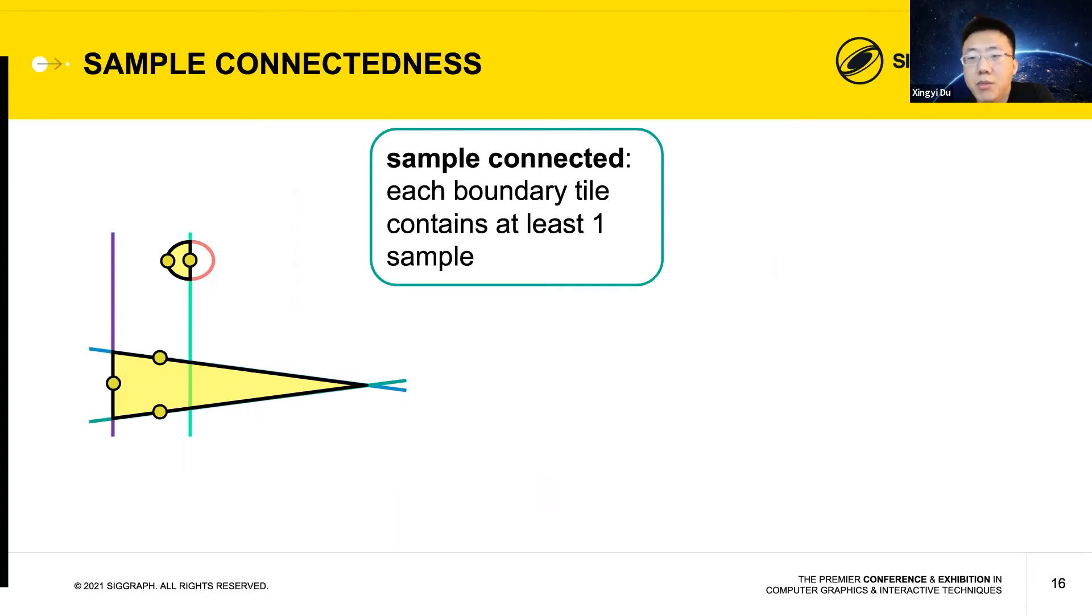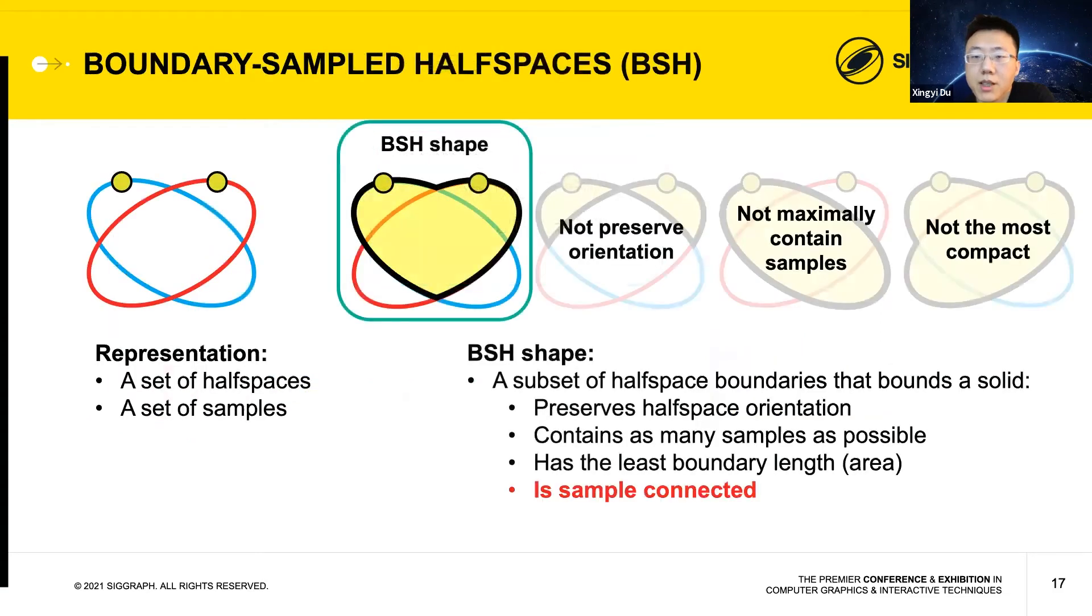We call the shapes that meet such requirements sample connected. The sample connected requirement ensures that the shape triangle is intact even with multiple potential corner cutting half spaces present, as shown here. Now we return to the definition of BSH shape and add the sample connected requirement. This gives the full definition of BSH shape.